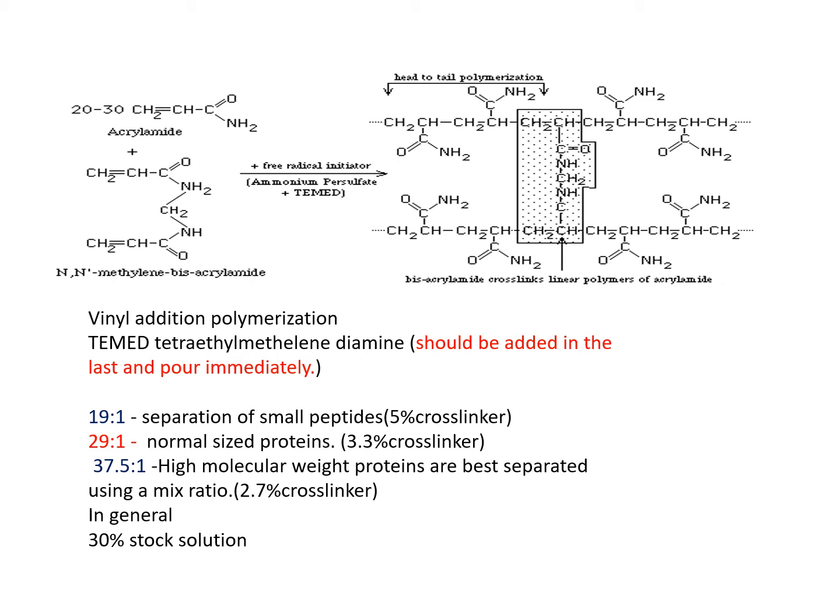The ratio of acrylamide to bisacrylamide is chosen according to the size of protein to be separated. A 19:1 ratio is used for separation of small peptides, giving 5% cross-linking. A 29:1 ratio is normally used in the laboratory for normal-sized proteins, giving 3.3% cross-linking. A 37.5:1 ratio is used for separation of high molecular weight proteins, giving 2.7% cross-linking. In general laboratory practice, a 30% stock solution is prepared for use.